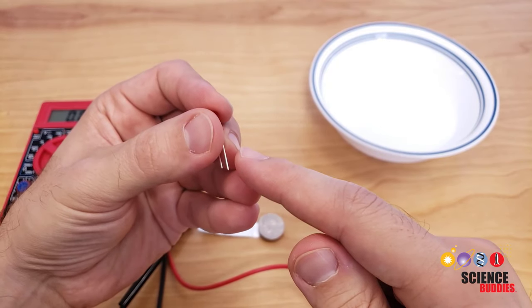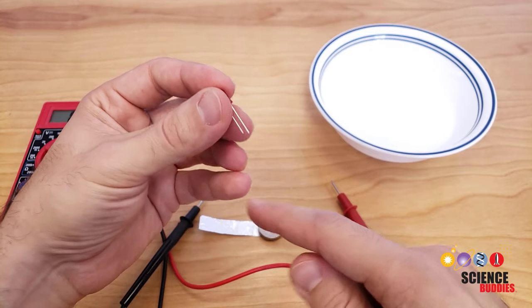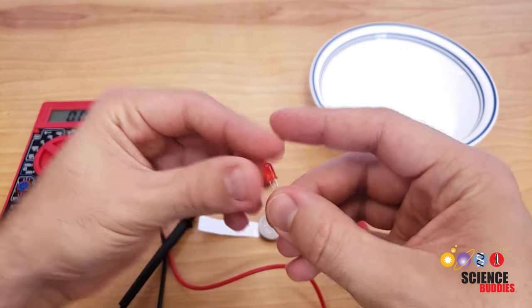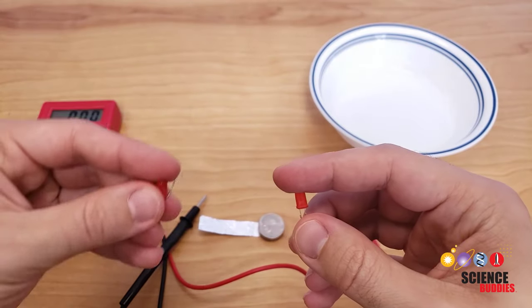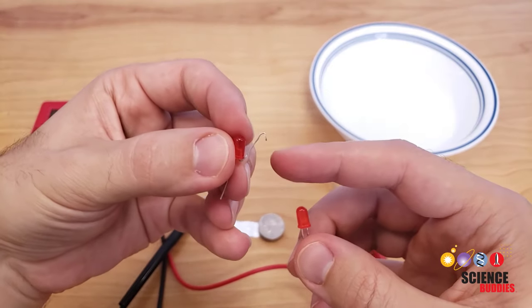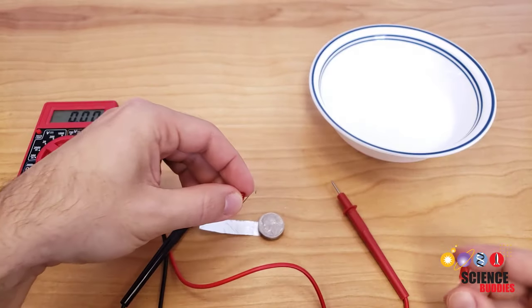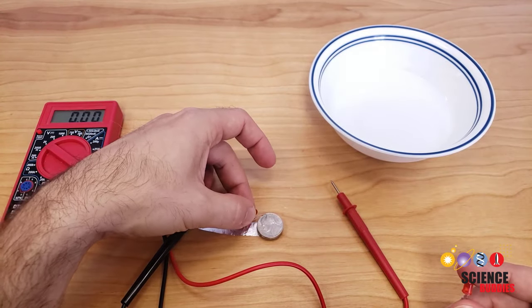So, you will need to connect the longer or positive leg to the nickel or top of your battery, and the shorter or negative leg to the aluminum foil or bottom of your battery. To do that, it is a lot easier if you bend the legs of the LED. So, you can see here, I have bent the positive leg up and then hooked the end of it down, which makes it easier to connect to the nickel.